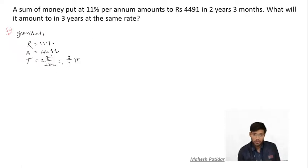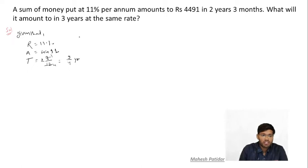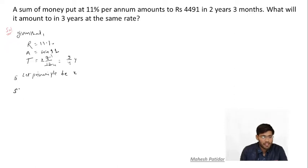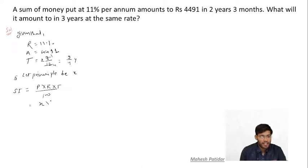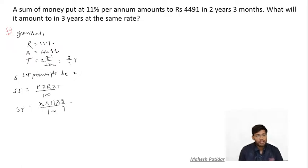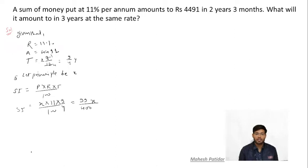We have to calculate the basic principal first. Let the principal be X. Then SI = P × R × T / 100 = X × 11 × (9/4) / 100 = 99/400 × X. So simple interest equals 99X/400.